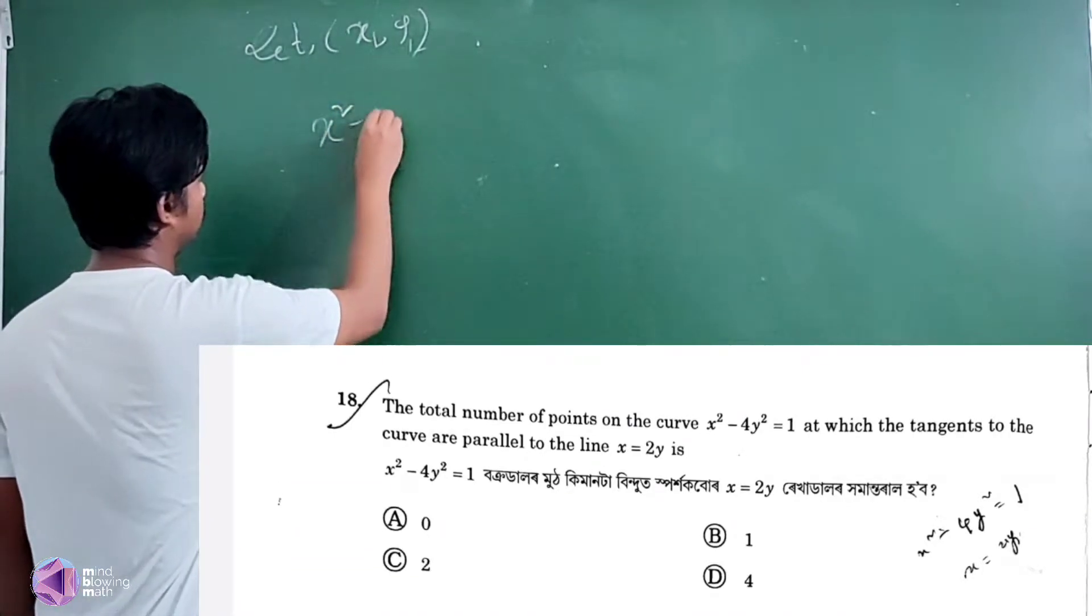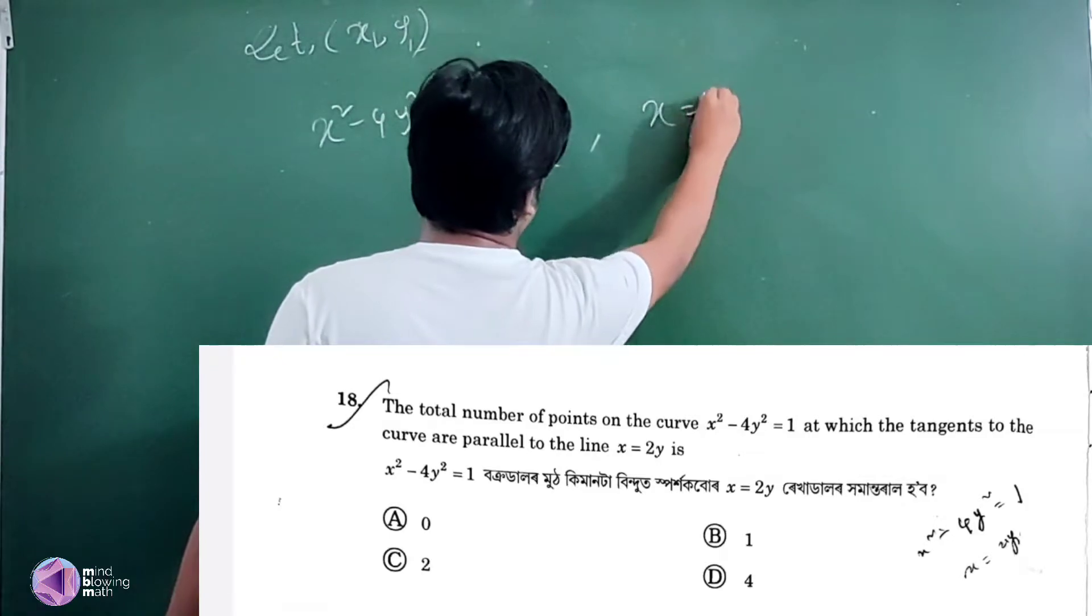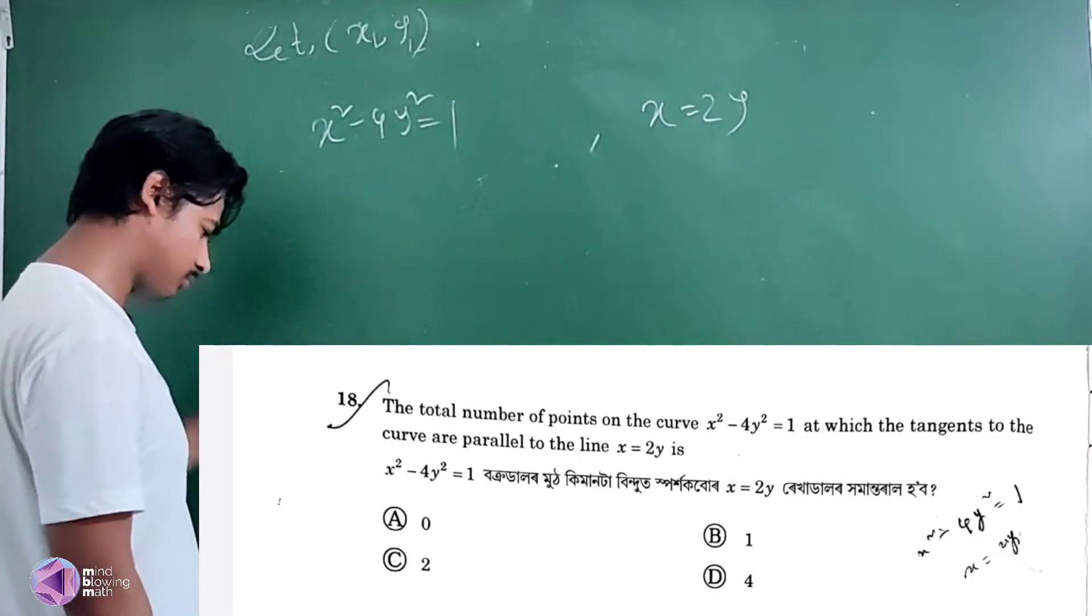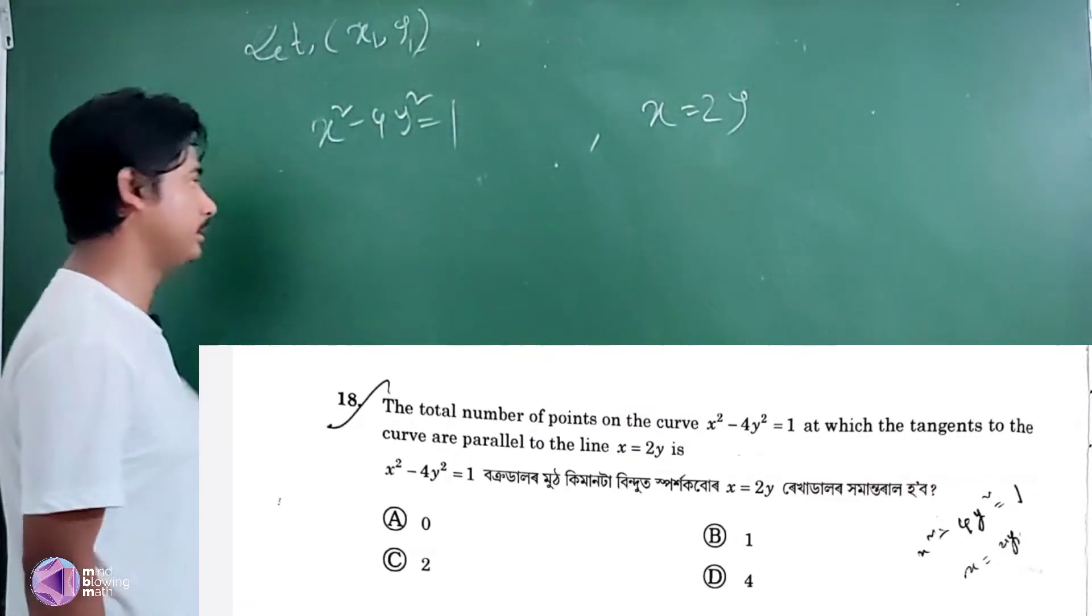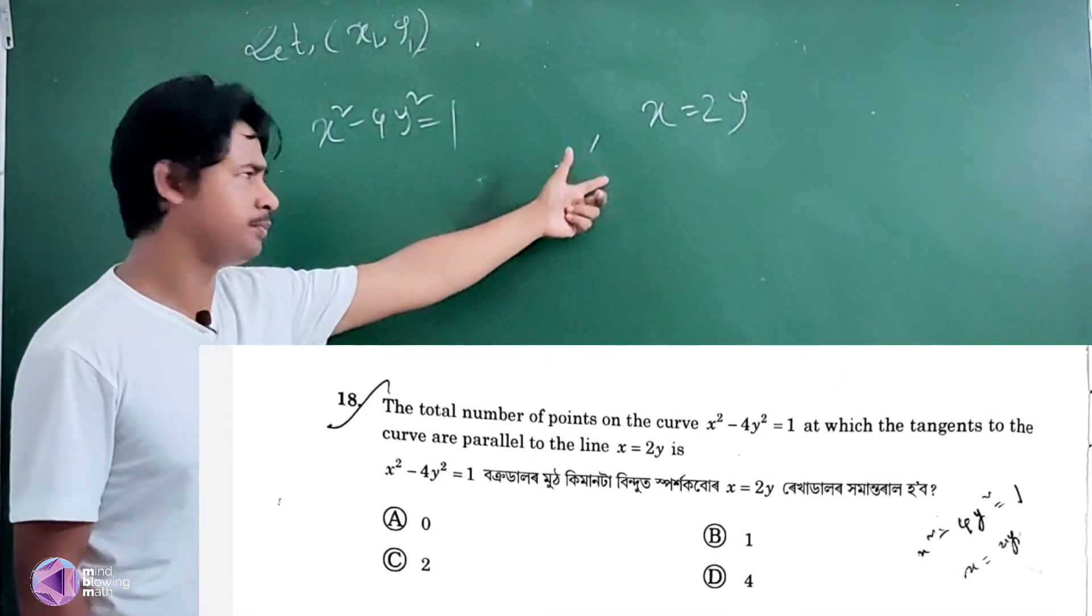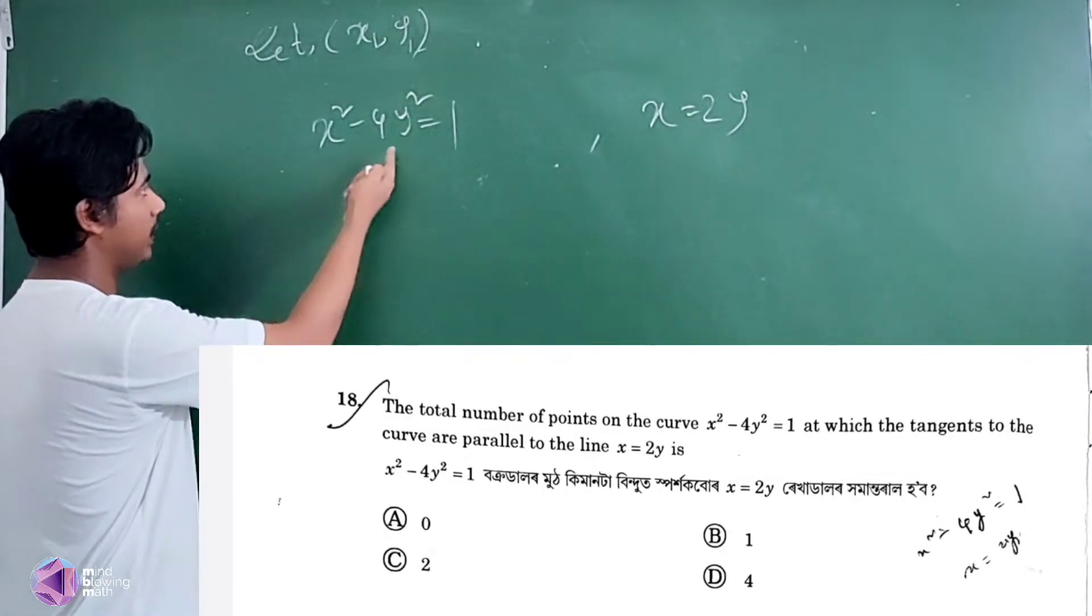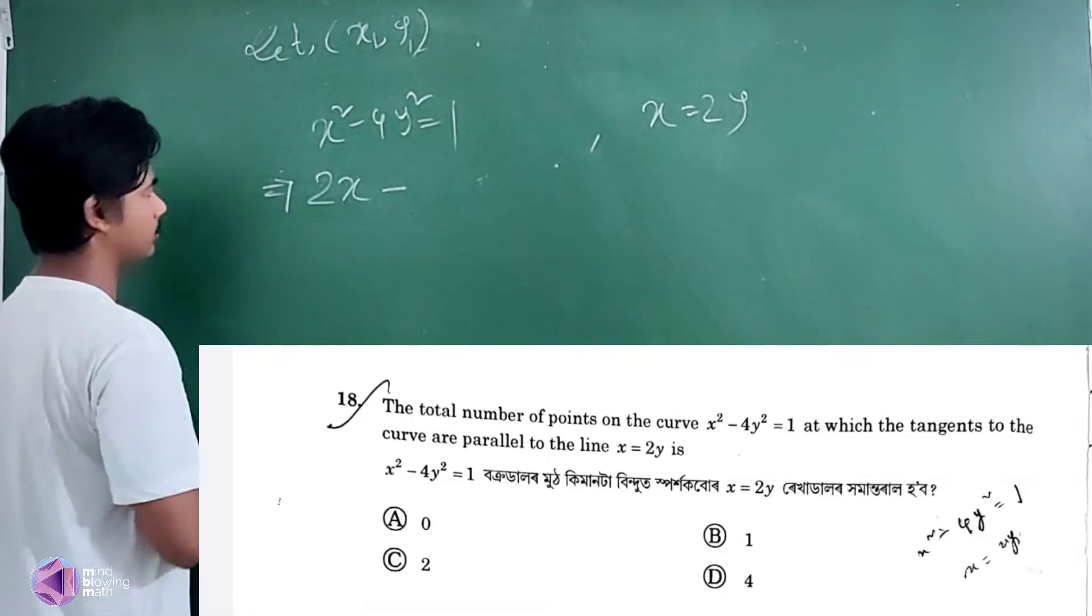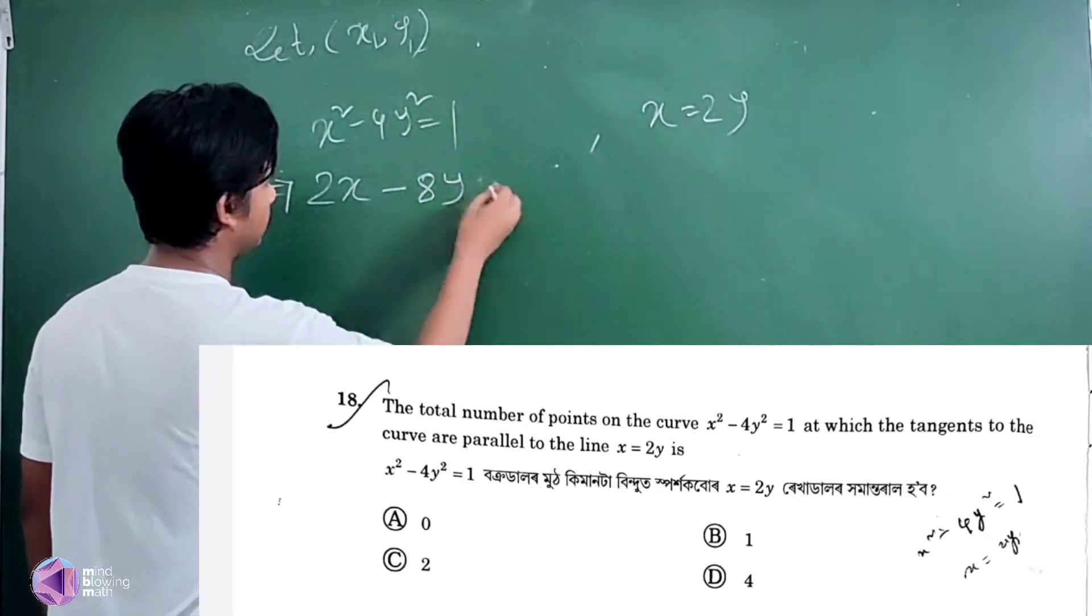The curve is x square minus 4y square equal to 1, and the line is x equal to 2y. So what do I have to do? Differentiate with respect to x: 2x minus 8y dy/dx equal to 0.